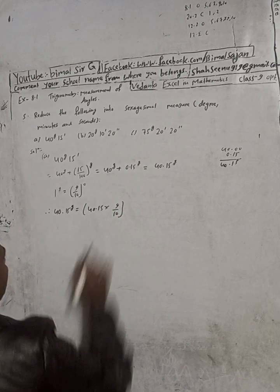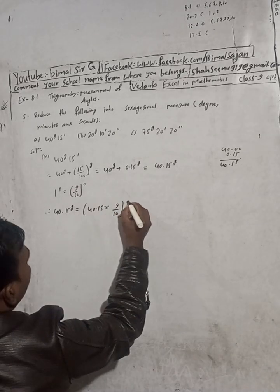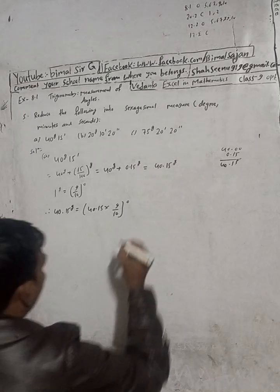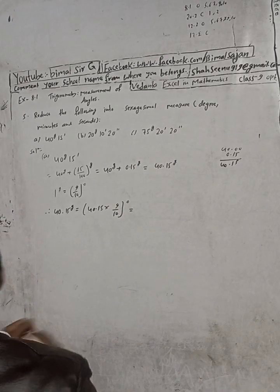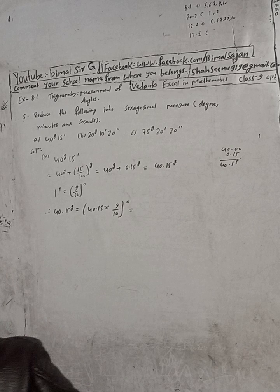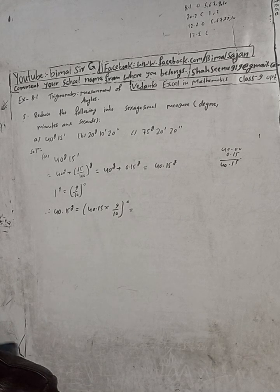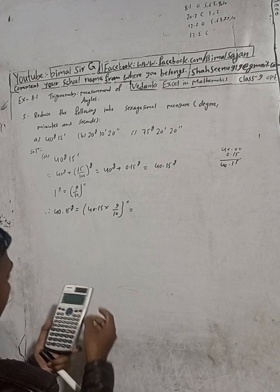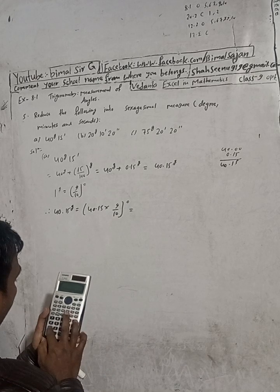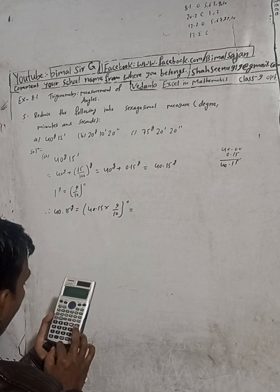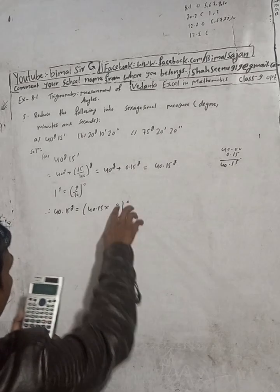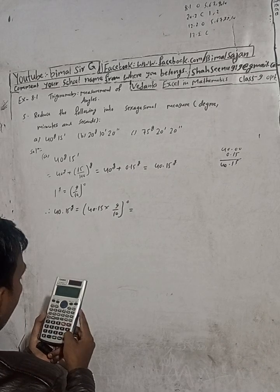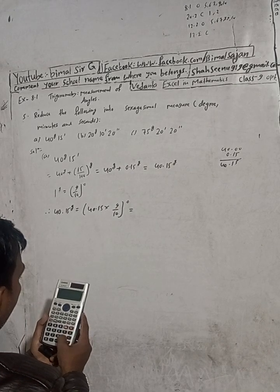When you multiply it, you have to multiply it in degrees. So we take 40.15 into 9 and divide it by 10.